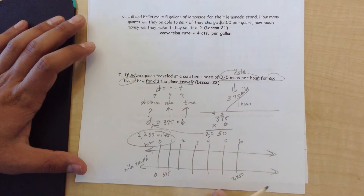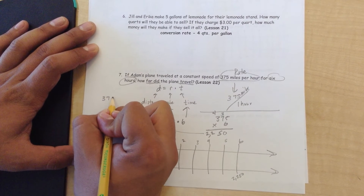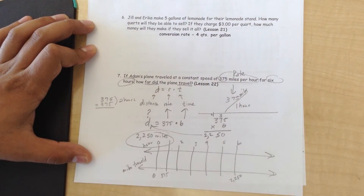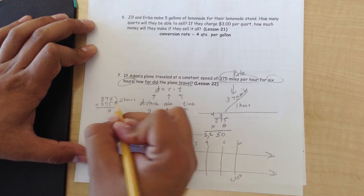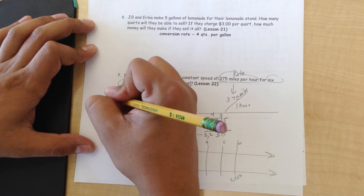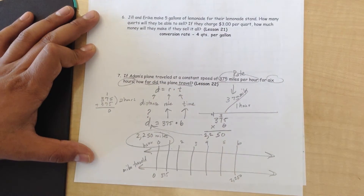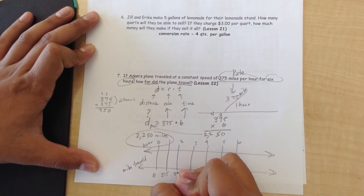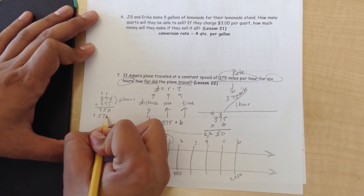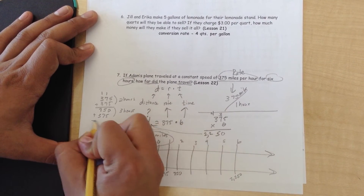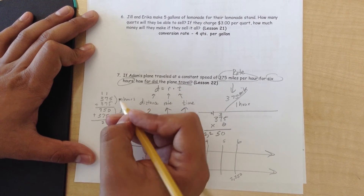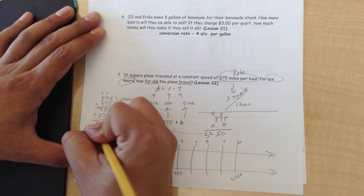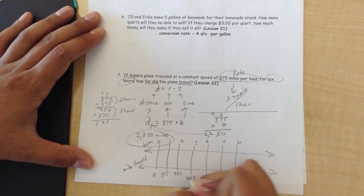So let's double check our work. 375 plus 375 — this is 2 hours. 5 plus 5 is 10, carry the 1. 7 plus 7 is 14, plus 1 is 15, carry the 1. 3 plus 3 is 6, plus 1 is 7. So that's 750. Add another 375 for 3 hours: 0 plus 5 is 5, 5 plus 7 is 12, carry the 1, 7 plus 3 is 10, plus 1 is 11. That gives us a total of 1,125.